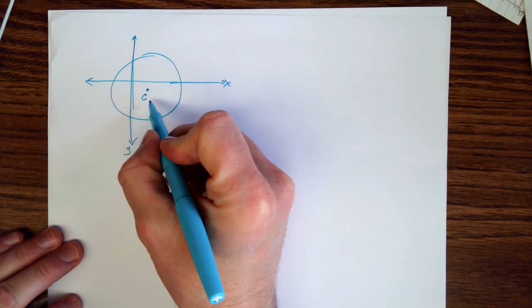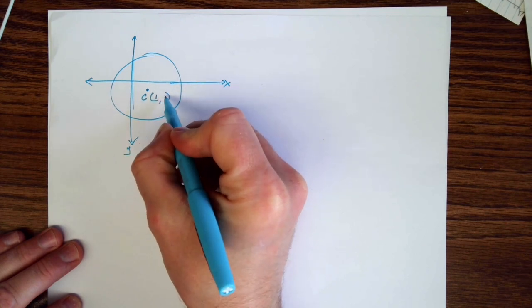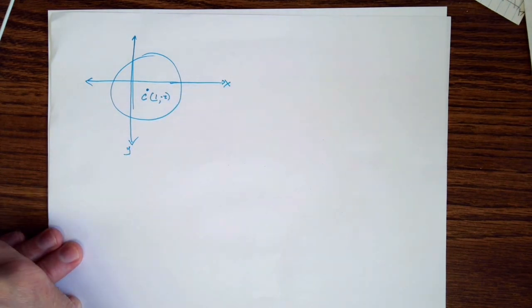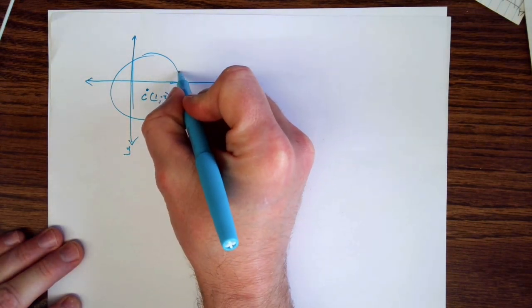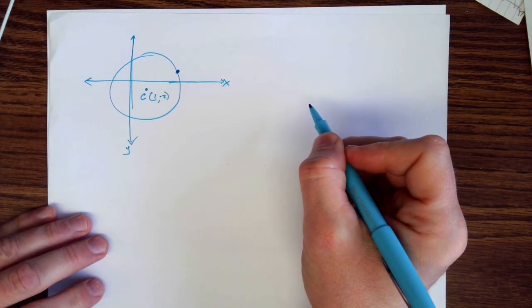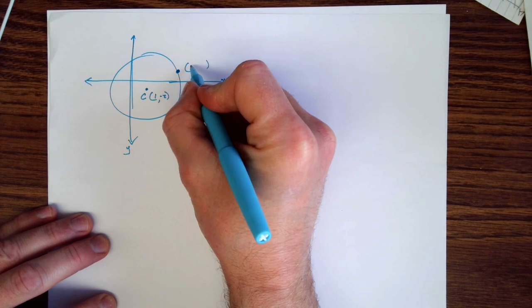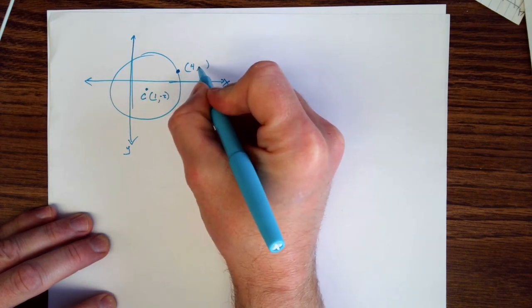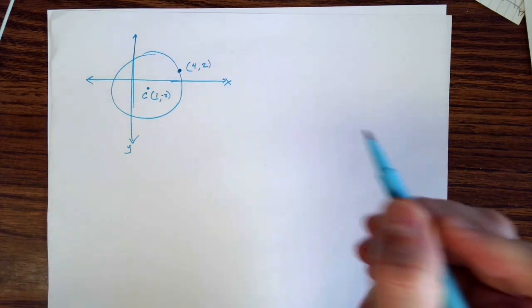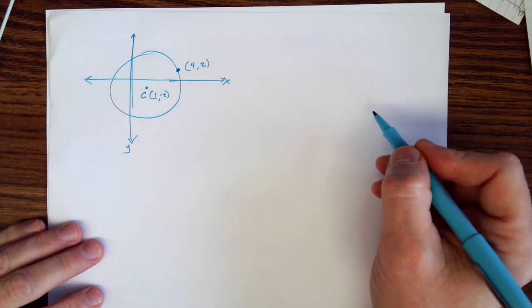The idea is that we have this thing called the center. At the center, we have at some point say maybe 1, negative 2. This is of course not drawn to scale, that's not really important though. And then we have some other point maybe right here. Let's say this point is 4 and 2. Again, we're not necessarily drawing this to scale. But we have those two points.